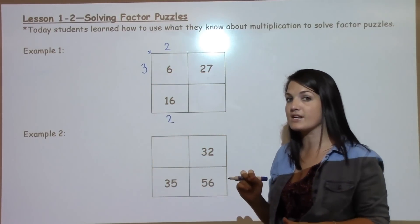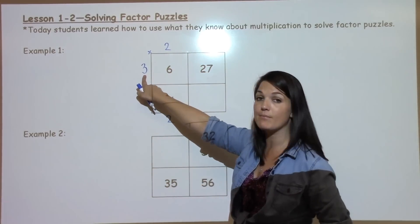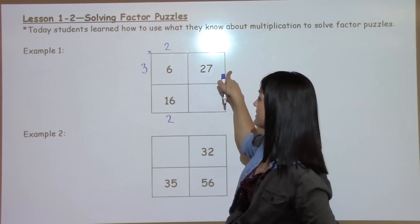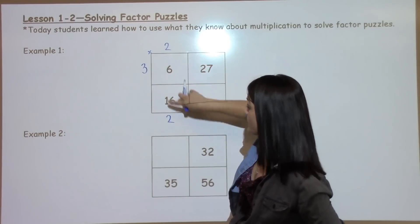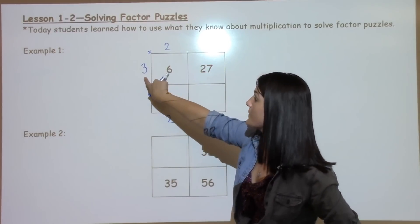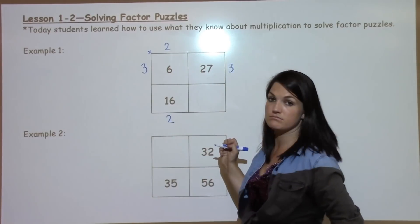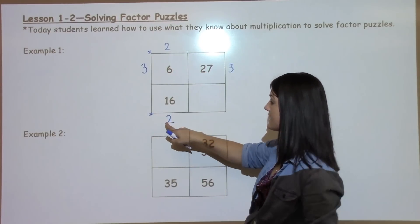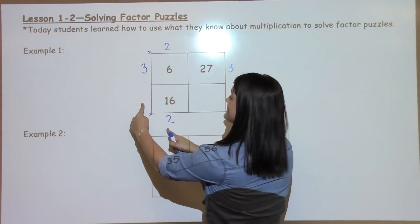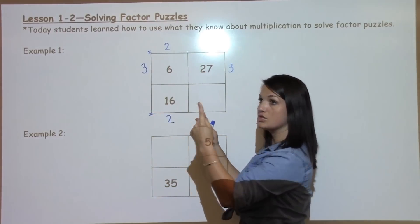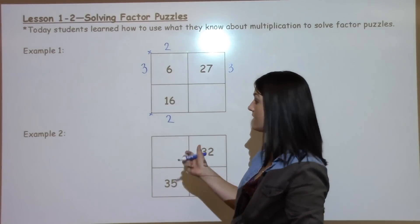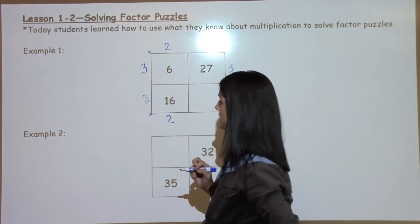Now the cool thing about a factor puzzle is once you have a number on one side, it gets to shoot right across to the other side. So like we have our 2 that went straight down here, our 3 gets to go straight across and we're going to use it later on. Now I have a little times right there and I think 2 times what is going to give me 16? 2, 4, 6, 8, 10, 12, 14, 16. 2 times 8 gives me 16.